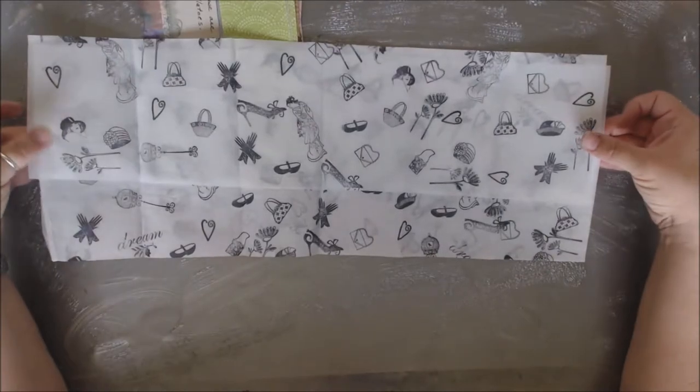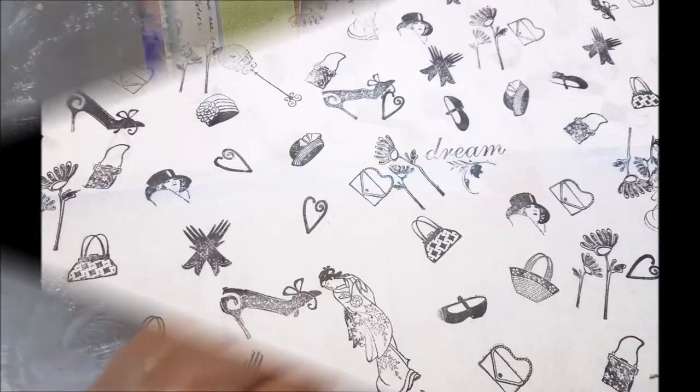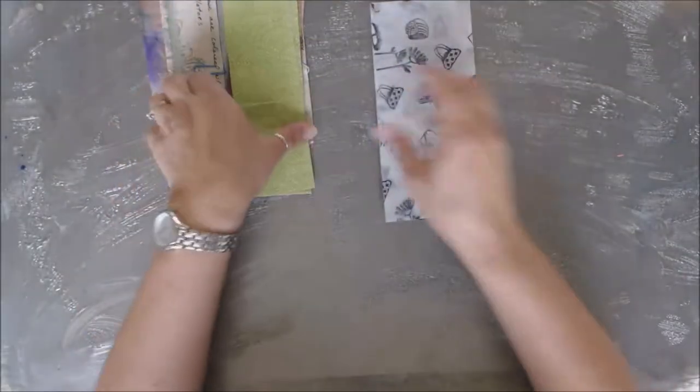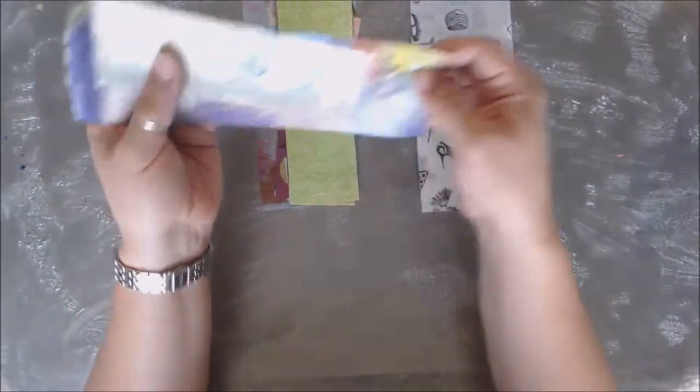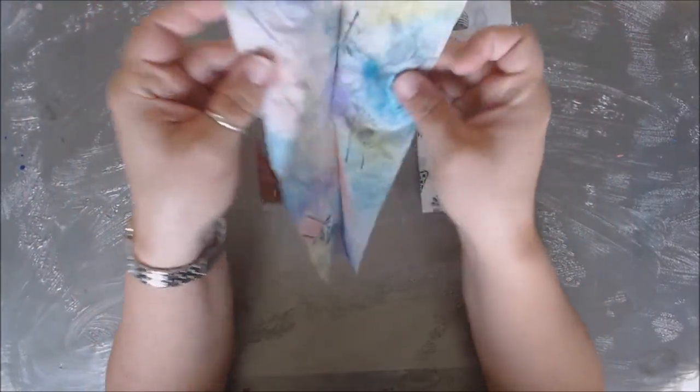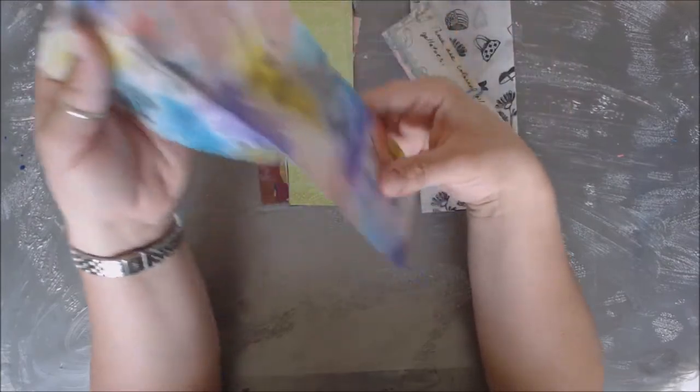This one she left plain, but then it looks like she went through and made a note that says these are ones I colored with gelatos. I think she took a section of the same tissue paper, this one she just did the flowers, and then she put gelatos all over them.